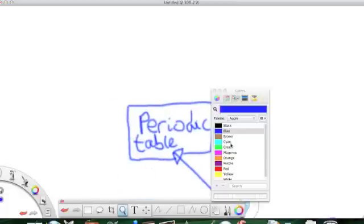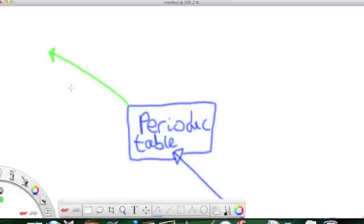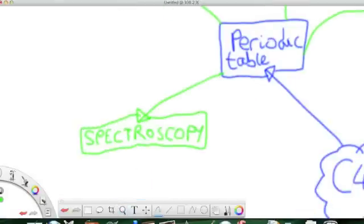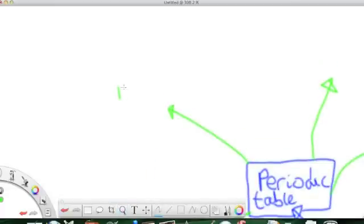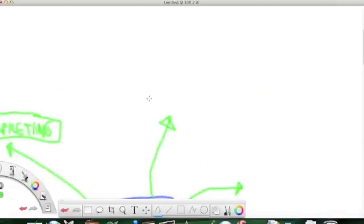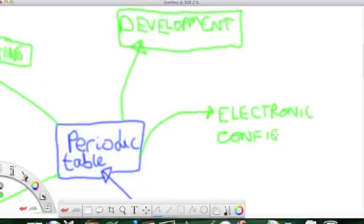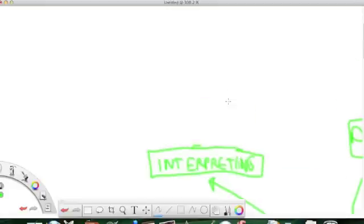So the periodic table in the spec has four main points. The first one is spectroscopy. The next one is interpreting the periodic table. The third one is the development of the table, and the last one is the electronic configurations of elements using the table. Let's look at interpreting the table first of all.